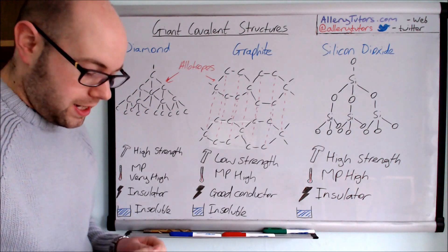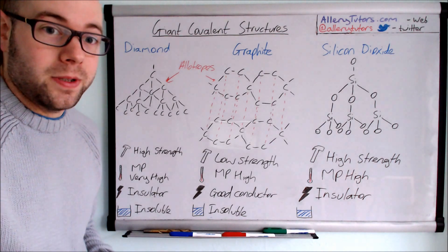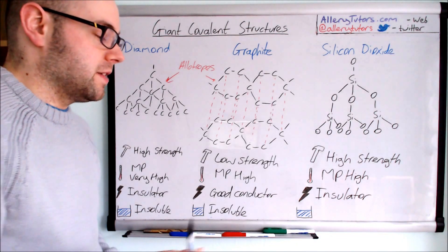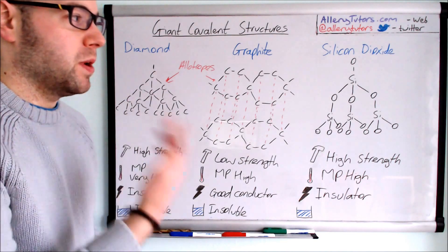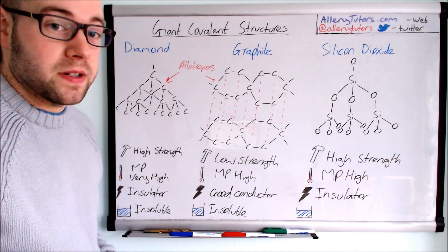The last one is solubility. Silicon dioxide is insoluble. It's really difficult to break this structure down to allow it to dissolve. The bonds are so strong, it's very difficult for this thing to dissolve in standard water.